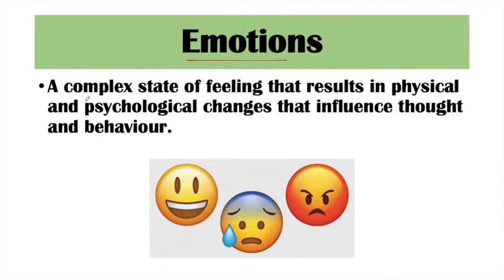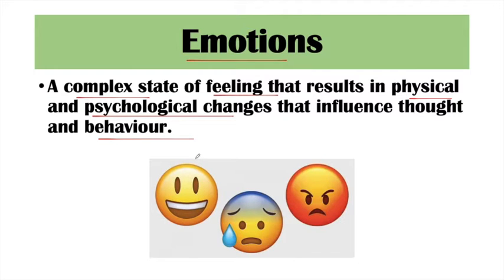First of all, what are emotions? Emotions are a complex state of feeling that result in physical and psychological changes and influence thought and behavior. As a state of our mind, as feelings, some physical changes happen in our body and some changes happen in our mental activities, which then result in changes in our behavior — those are called emotions. For example, when we are happy, a smile comes on our face.